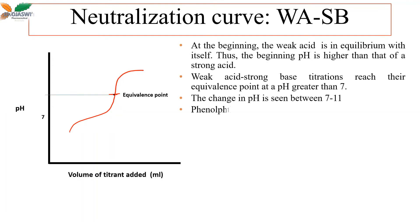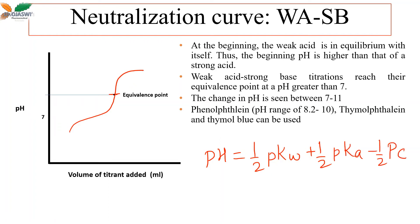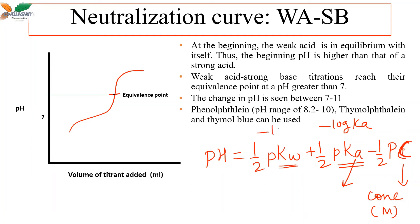The pH at the equivalence point can also be theoretically calculated using a formula where C is the concentration of the salt in molar, pKa is the negative log of the dissociation constant Ka, and pKw is the negative log of Kw. Theoretically the pH at the equivalence point can be calculated, and it can also be determined potentiometrically.